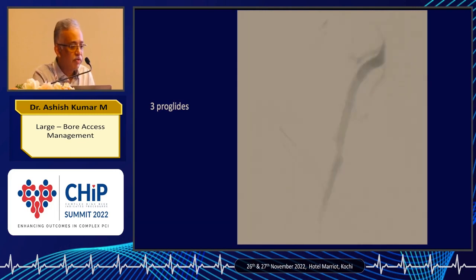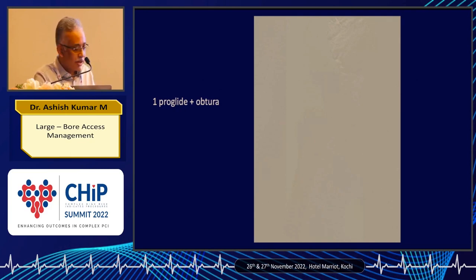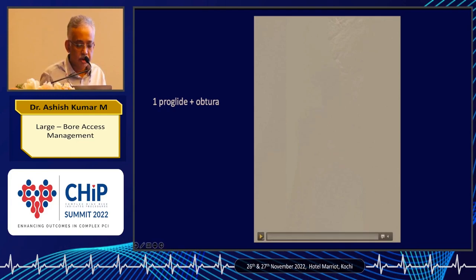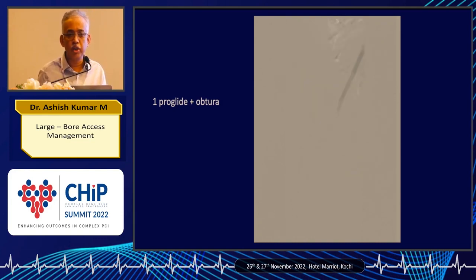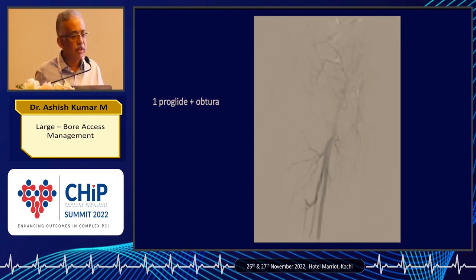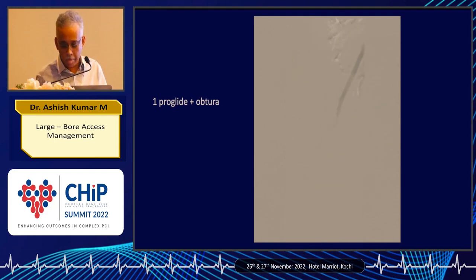In certain situations — when the vessel is diseased, especially in the elderly, and not large enough to accommodate two ProGlides — we use a hybrid combination of ProGlide and Optura. Our experience is mainly with ProGlide and Optura. Also, if the femorals are diseased, you don't use a sheath; go bare so you are downsizing the delivery system by at least one French, and it works better.